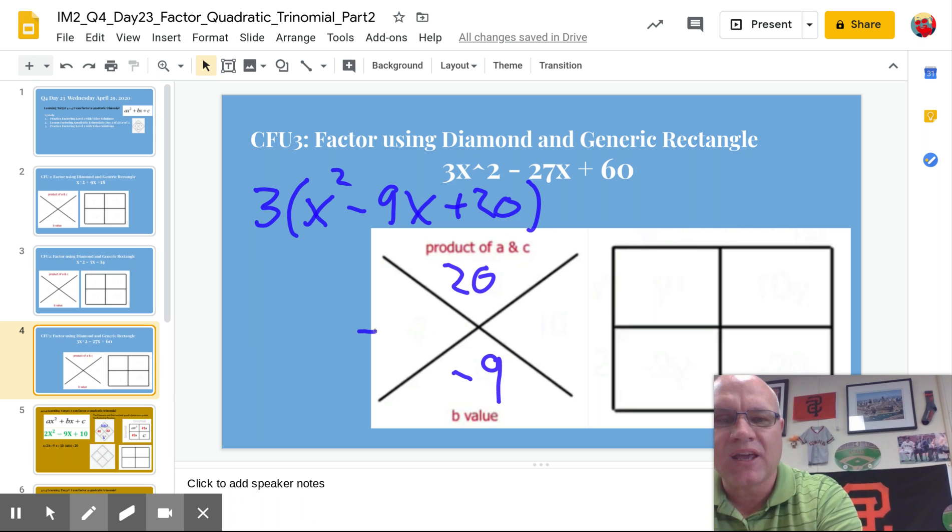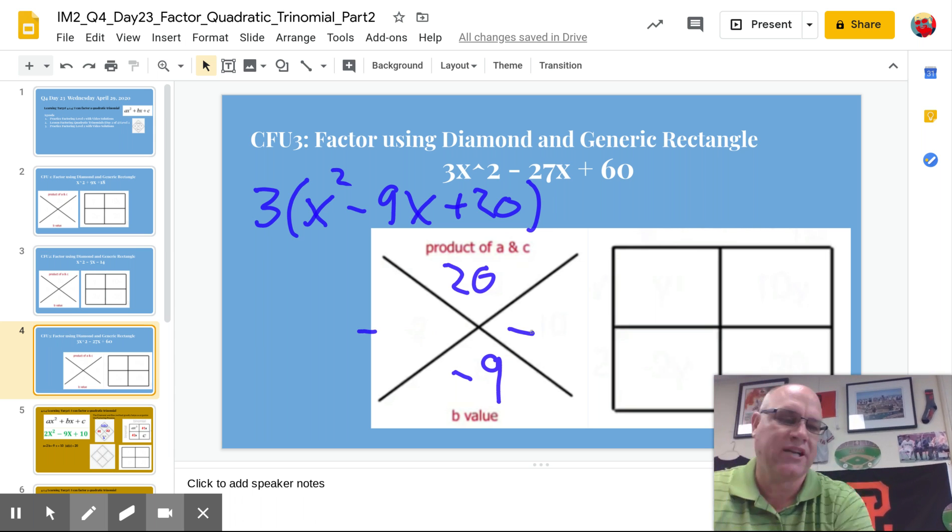So then you've got to think of what are your factors of 20 that are going to get you to 9 when you add them. So 1 and 20, no. 2 and 10, no. I'll get you 12. 4 and 5, ding ding. So we know one factor is going to be the negative 4 and the negative 5.